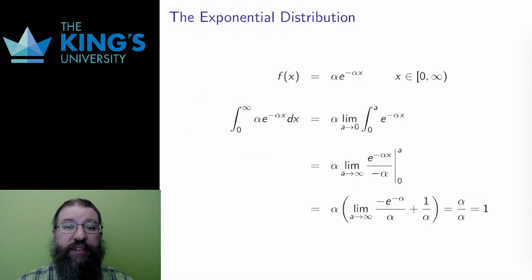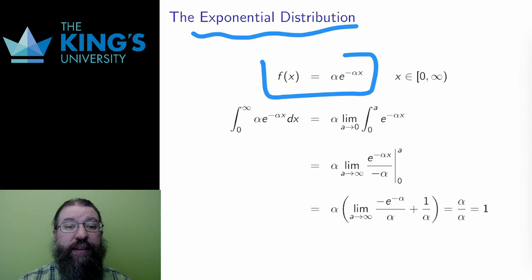Let me get to some examples. I have three examples in this video, and they are all central examples in the theory and useful for various kinds of data. The first is the exponential distribution. f(x) equals alpha e to the negative alpha x, where alpha is a positive parameter, and the domain is from 0 to infinity.